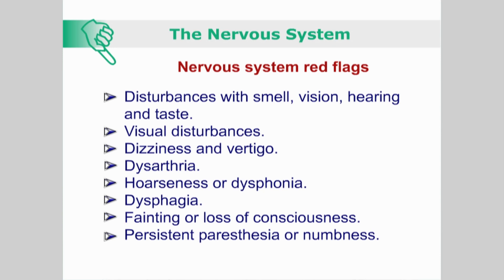Red flags for the nervous system include disturbances with smell, vision, hearing and taste; dizziness and vertigo; dysarthria; hoarseness and dysphonia; dysphagia; fainting or loss of consciousness; and persistent paresthesia or numbness.